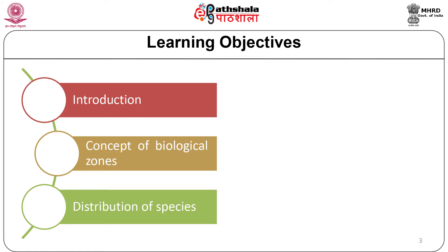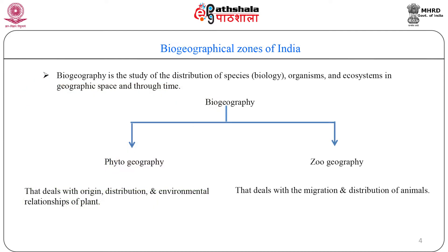Biogeography is the study of the distribution of species — that is, biological organisms and ecosystems — in geographic space and through time. Biogeography is divided into two parts: phytogeography, which deals with the origin, distribution, and environmental relationships of plants, and zoogeography, which deals with the migration and distribution of animals.